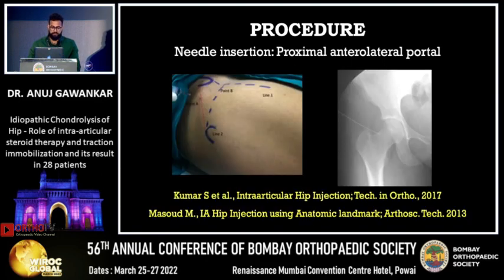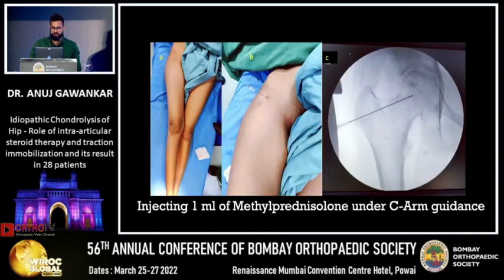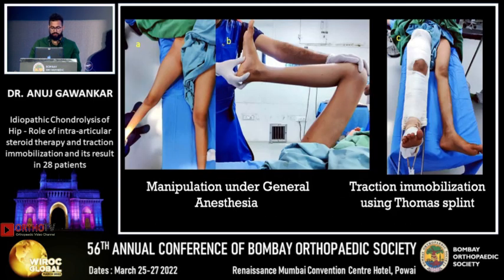This is how we injected the steroid. We drew a line from the ASIS to the greater trochanter, and at the junction of the upper one-third and lower two-thirds we injected intra-articular methylprednisolone — 1 ml equivalent to 40 mg — with 1 ml of sensocaine and 2 ml of xylocaine. This was done under C-arm guidance via the anterolateral portal, followed by manipulation under general anesthesia and traction immobilization using a Thomas splint.